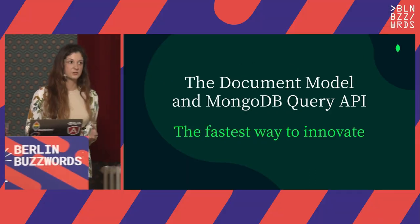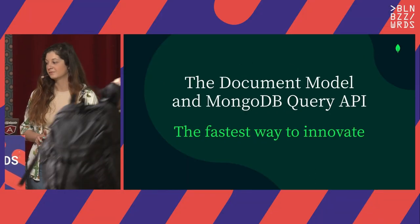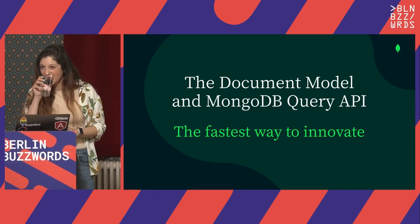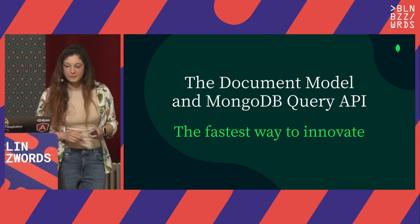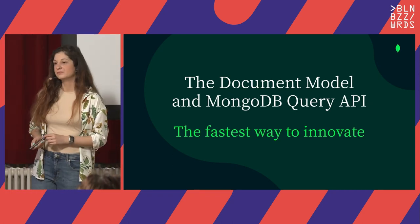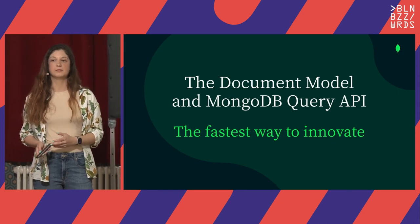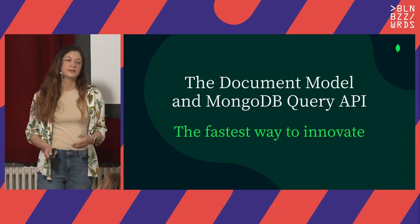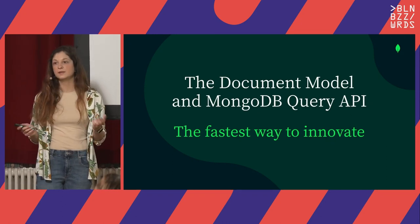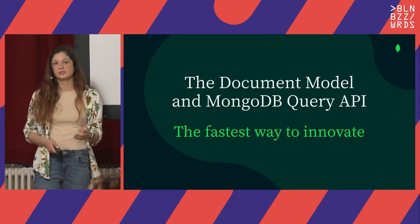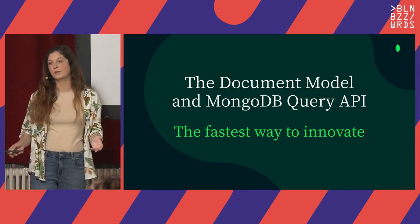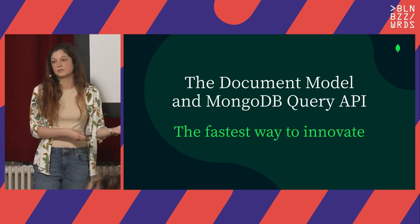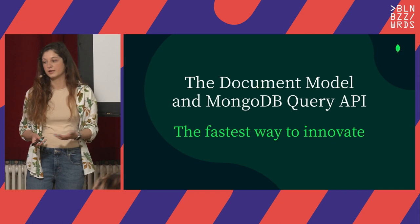Let's get started with a short intro about MongoDB. The thing we are going to be using the most today, besides Apache Lucene, is the MongoDB document model and the query API. The query API is the API — not exactly a language — that we use to query documents, query the database. Kind of like the SQL that people use to query a relational database.